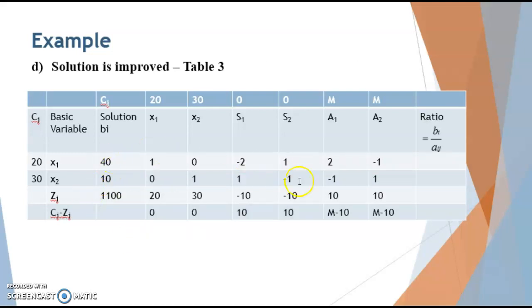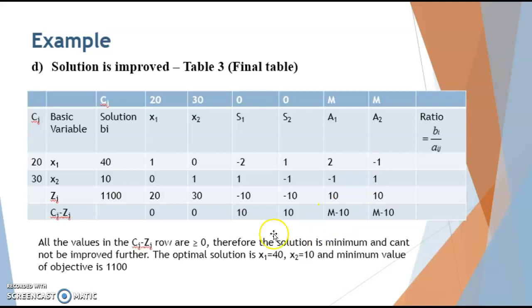This gives the final table. Check the optimality condition again — now all values in the Cj minus Zj row are greater than or equal to 0, because M is positive and anything subtracted from capital M is still positive. Our optimality condition has been satisfied and the solution cannot be improved further. The optimal solution is x1 equals 40, x2 equals 10, and the minimum objective value is 1100.